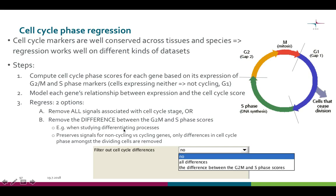The latter option is useful, for example, when studying differentiating processes, as it preserves the signals separating the non-cycling and cycling cells. Only the differences in cell cycle phase amongst the proliferating cells are regressed out.